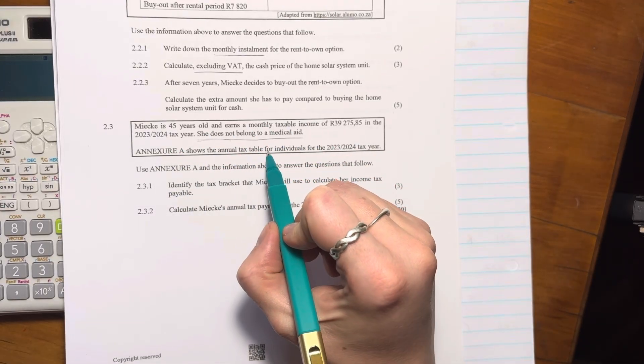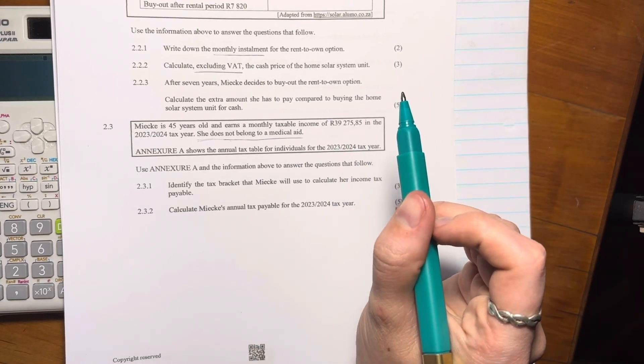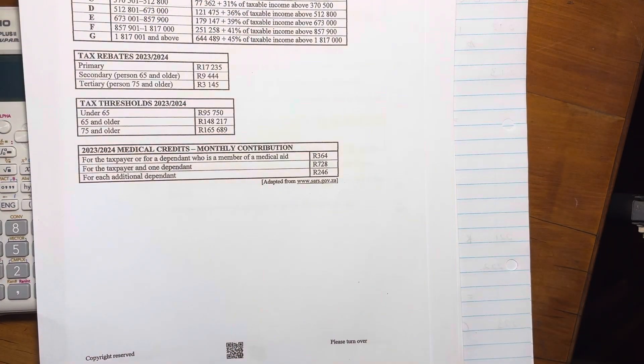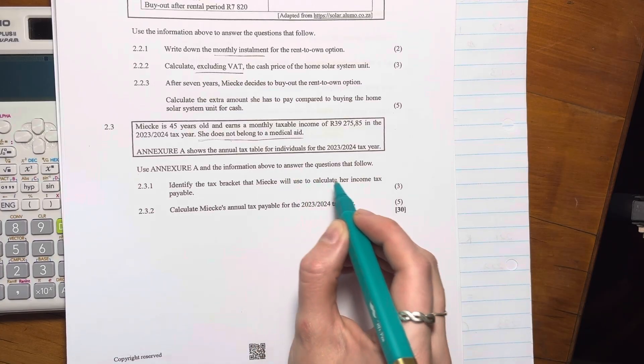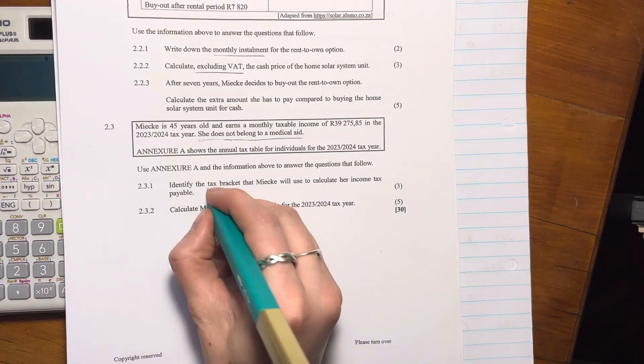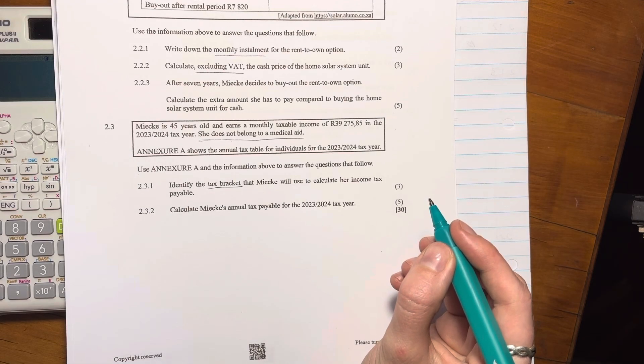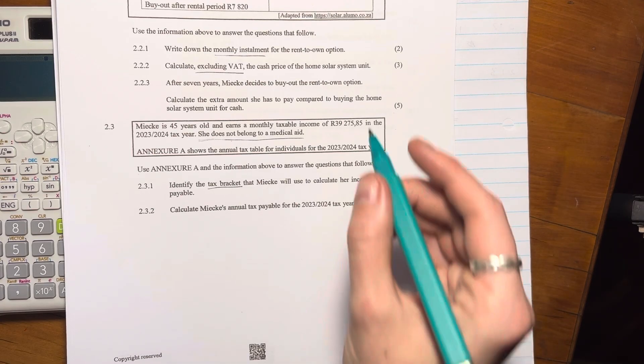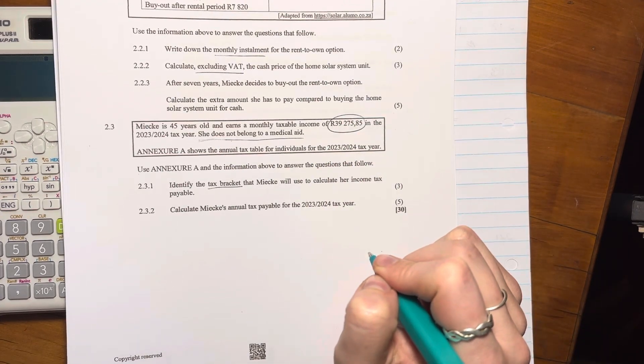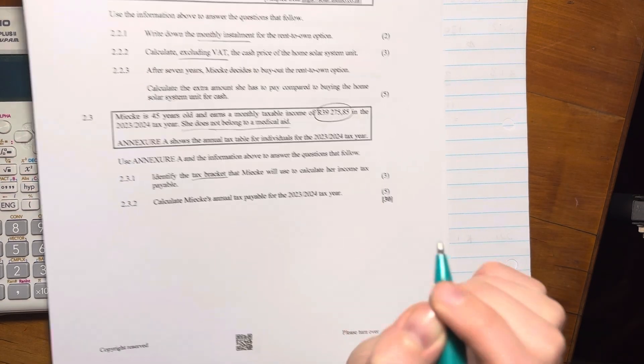Annex to A shows the annual tax table for individuals for this tax year. So make sure you go get Annex to A, I have it here next to me. You should be familiar with the setup now, but we'll go through it. Use Annex to A and the information above to answer the questions that follow. So identify the tax bracket that Mika will use to calculate her income tax payable. Now remember when we work out taxable income, we have to work it out annually. And so we have to change this amount over here into an annual amount because monthly amounts are not how we figure out what tax bracket someone's in.